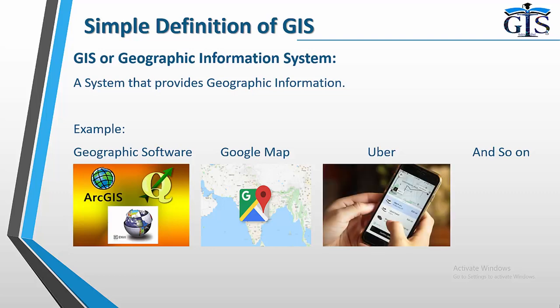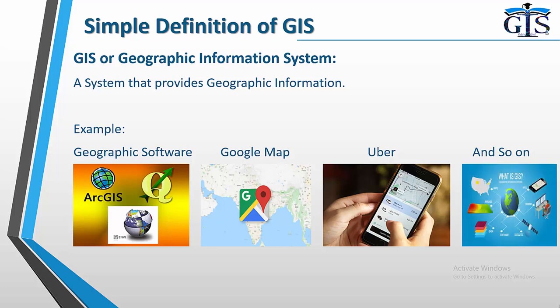Who does not know about Uber? In our daily life, we are already using Uber for trip purposes, where we can see a geographic map, input the destination point, and the rider can find us by identifying the pickup point using an informative geographic map. So this is also a type of GIS. Even when you visit any restaurant and check in on your social network, this is also a kind of GIS. We can find many more examples of GIS.